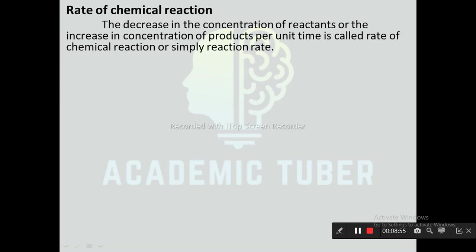Rate of chemical reaction: The decrease in the concentration of reactants or the increase in the concentration of products per unit time is called the rate of chemical reaction, or simply reaction rate. The rate of different chemical reactions is different — some reactions are fast whereas some reactions are slow. For example, the reaction between acid and base is fast whereas rusting of iron is a slow process. At the initial stage of reaction, the concentration of reactant is maximum and the concentration of product is zero, as no product is formed at that time. When the reaction starts, the concentration of products goes on increasing and the concentration of reactants goes on decreasing.